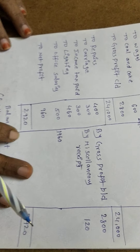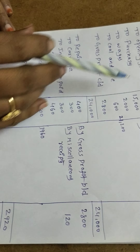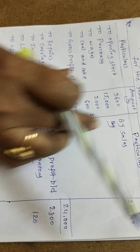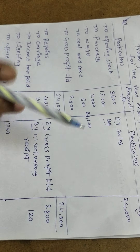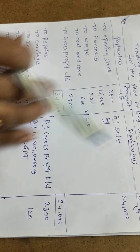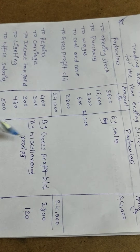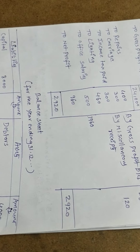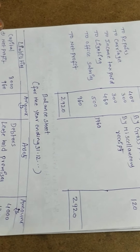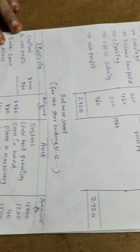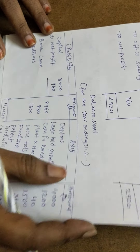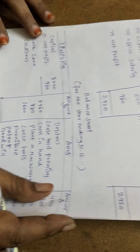Like this we prepare final accounts: trading account, profit and loss account (prepared together), and balance sheet — the balance sheet must tally. Next problem.